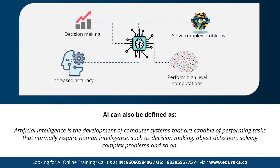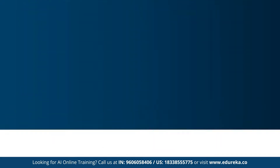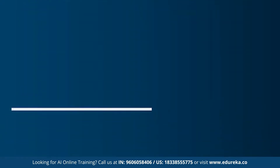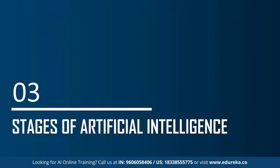Artificial intelligence helps in decision making, solving complex problems, performing high-level computations, and increasing the accuracy of predictions. These are the main features of AI. Now let's understand the different stages of artificial intelligence.